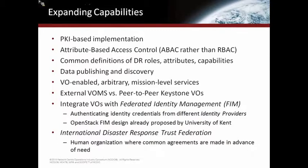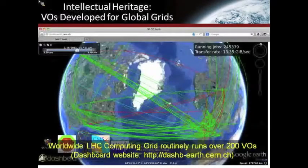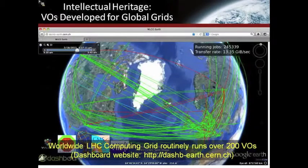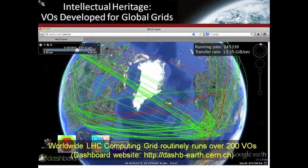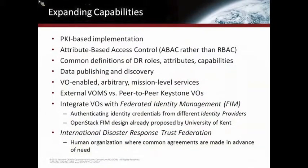Finally, there's the notion of an International Disaster Response Trust Federation. There would need to be a human organization that works out high-level agreements ahead of time — before the actual need — about common understanding of disaster response roles, attributes, and capabilities. This mirrors the existing international grid trust federation that specifies how different organizations run their certificate authorities. When you demonstrate you're doing the right things, everybody in the trust federation will trust certificates signed by your CA. With that, I'm not going to do a demo right now, but you'll see VOs referenced in all of the other demonstrations.